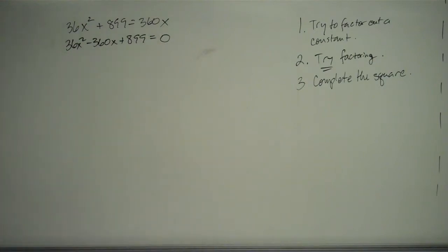The next thing we would normally do is try factoring. 899, it is not immediately obvious what the factors of 899 are. And so I'm not sure that trying to factor is necessarily a good idea either.